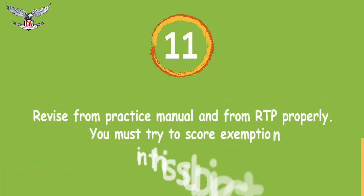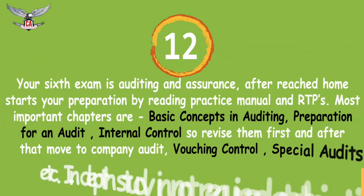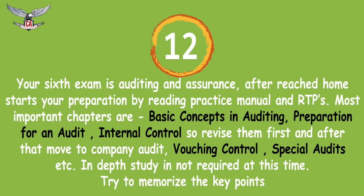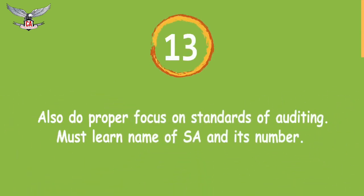Revise PM or RTP — you must try to score an exemption. For Audit, after reaching home, start preparation from PM and RTPs. Important chapters are basic concepts in auditing, preparation for audit, and internal control — revise them first, then move to company audit. For vouching and special audit, in-depth study is not required at this time; try to memorize the key points. For Standards of Auditing, you must learn the name, sign, and number of each standard.